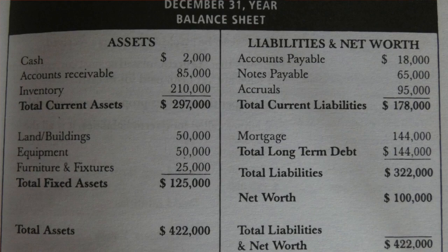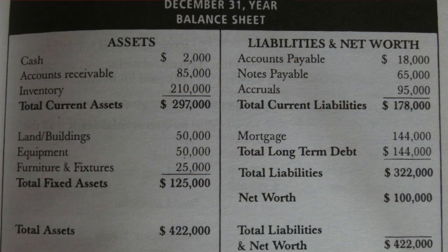Now let's look at the fixed assets. Land and building is $50,000, equipment is $50,000, and furniture and fixtures is $25,000. These all come under fixed assets because it might take more than a year to sell them and receive cash. The total value of fixed assets is $125,000.